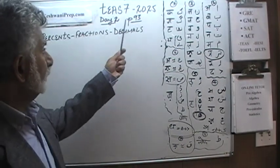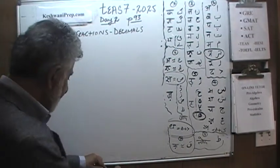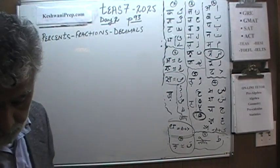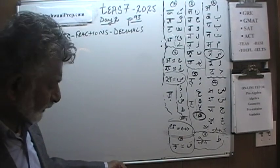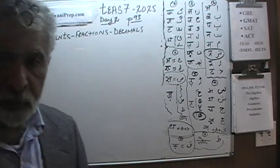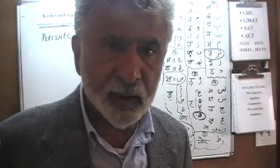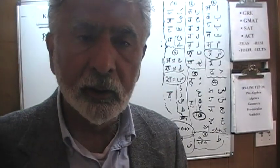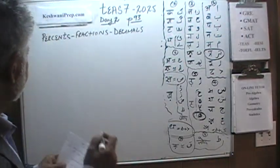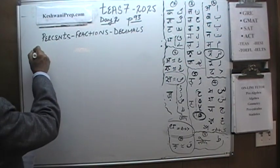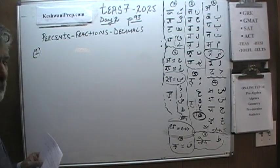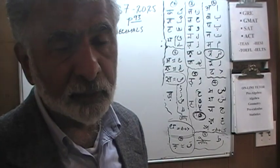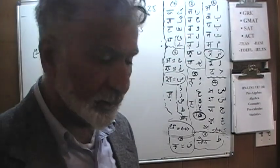Today is our lesson number 2. We are on page number 93. We are going to pick up from where we left off yesterday. Yesterday we did the first 5 problems at the top of the page, and today we do the bottom 5 problems, which they are calling practice problems. Problem number 1 is the only one we are going to do in this video because it actually has 6 parts to it.